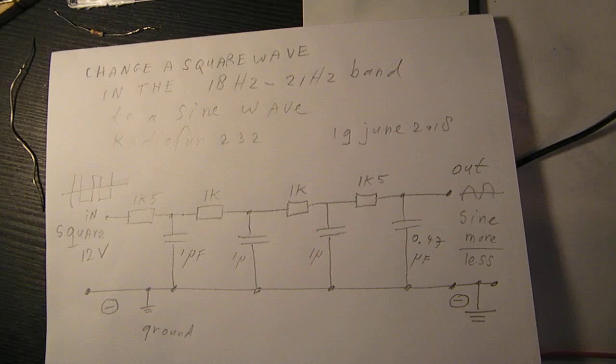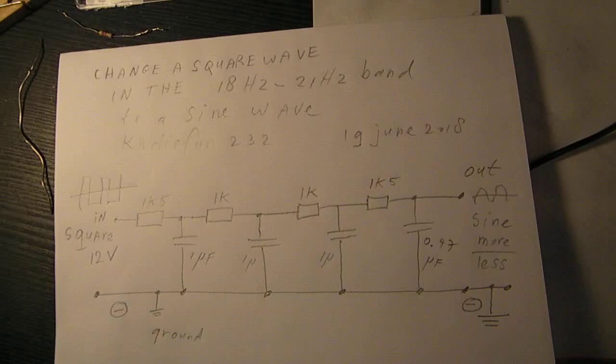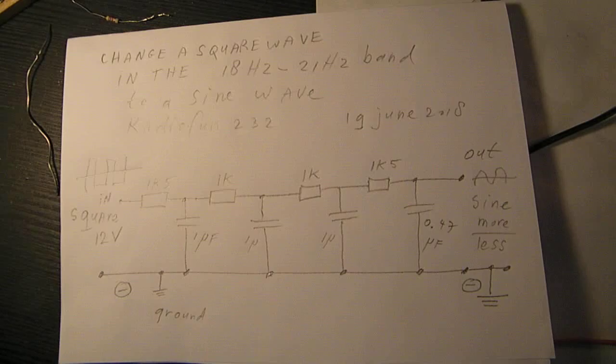when you send in a square wave into such a filter made with resistors and capacitors. And now I've used capacitors in the microfarad range, so 1 microfarad and 0.47 microfarad.